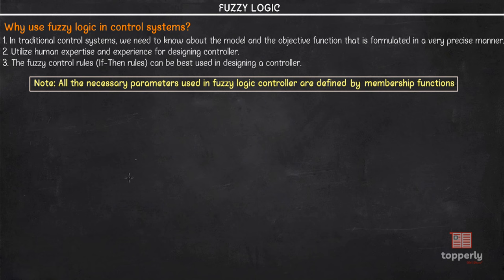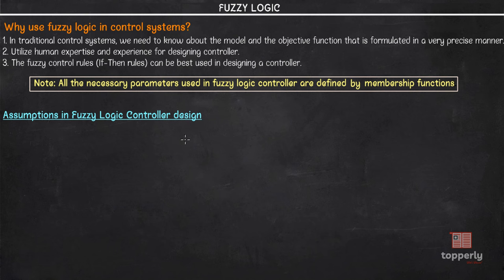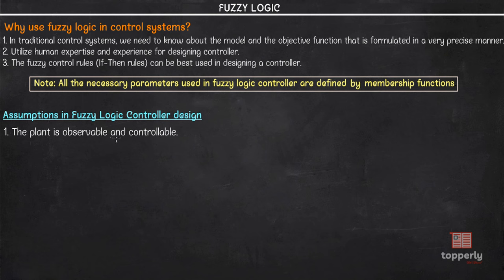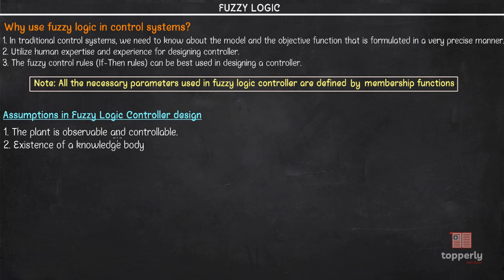Now let's look at the assumptions used in fuzzy logic controller design. Six assumptions are to be made. The first is that the plant is observable and controllable — the input, output, and state variables should all be available for observation and control. The second is the existence of a knowledge body: there should be a knowledge body where linguistic rules and input-output data sets are present, from which fuzzy if-then rules can be extracted.